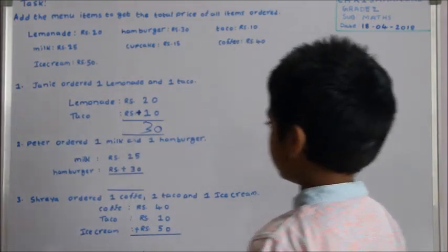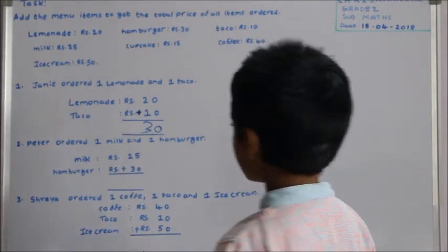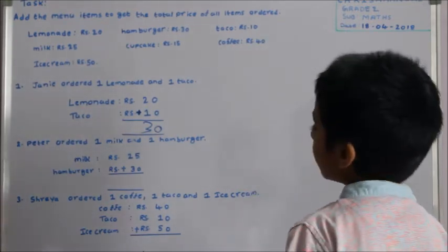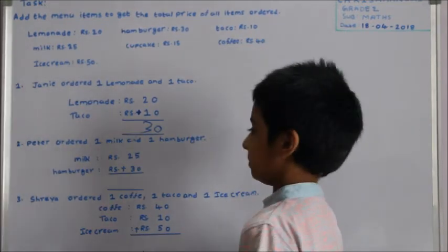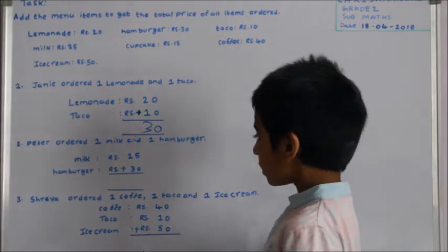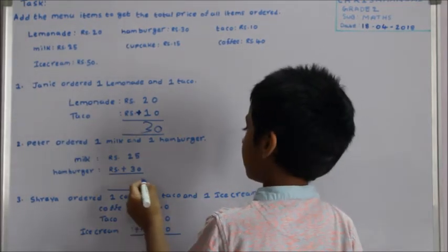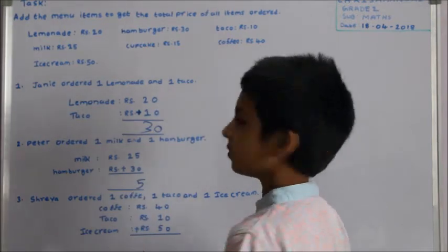Next one. Peter ordered one milk and one hamburger. Milk: rupees 25, hamburger: rupees 30. We need to add. Five plus zero is five, two plus three is five.